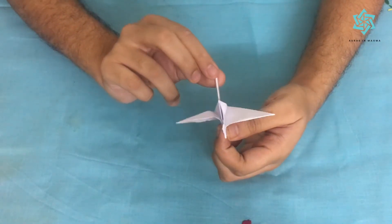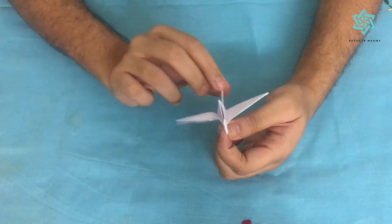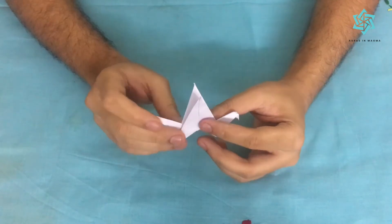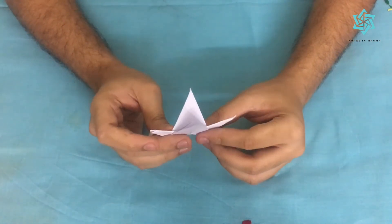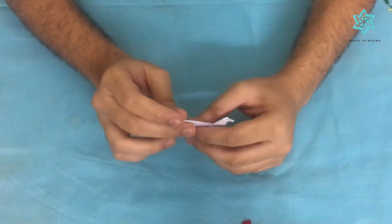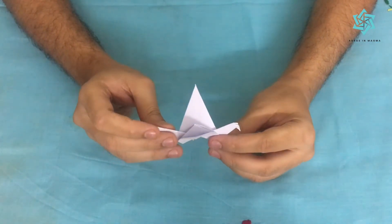Hey y'all, so this model in my hand is called a flappy bird. You all can see it flapping, right? This looks like a crane and is made with steps almost similar to a crane. You can have a look at the link on the top which gives the instructions on how to fold a crane.